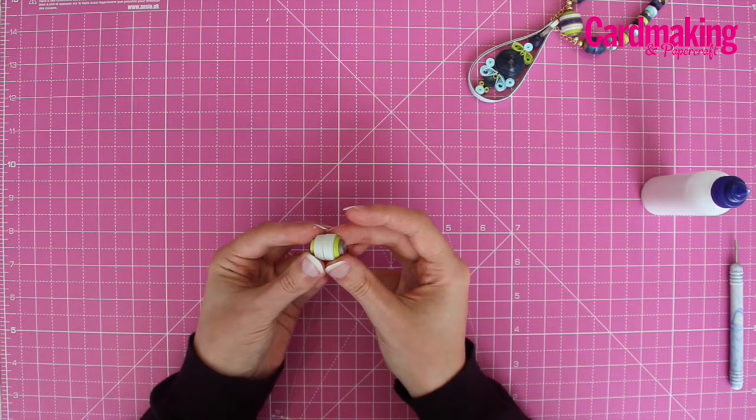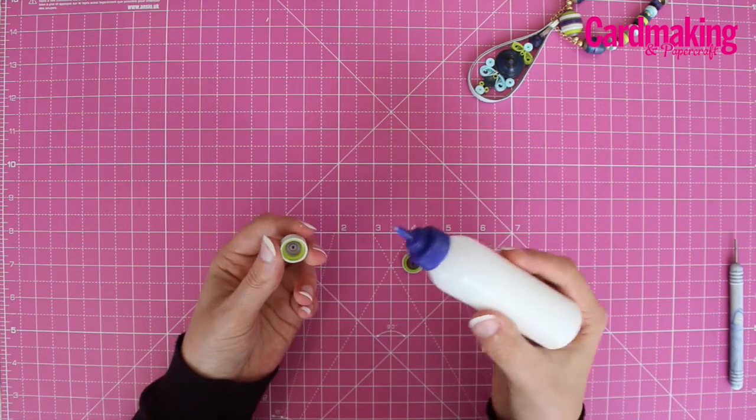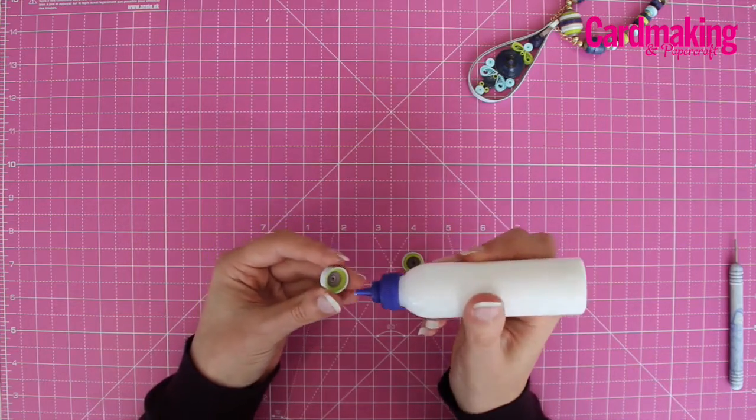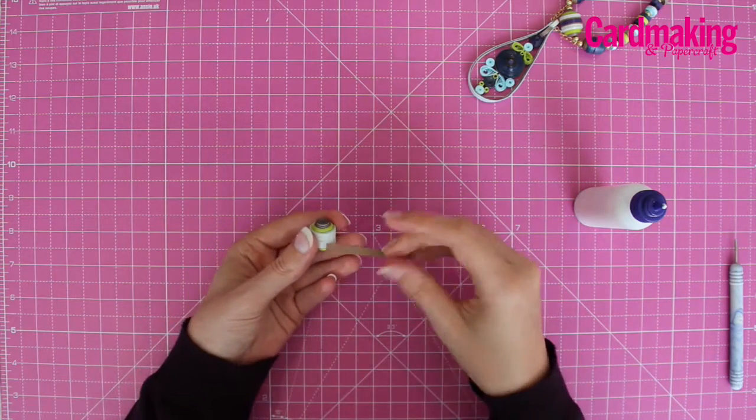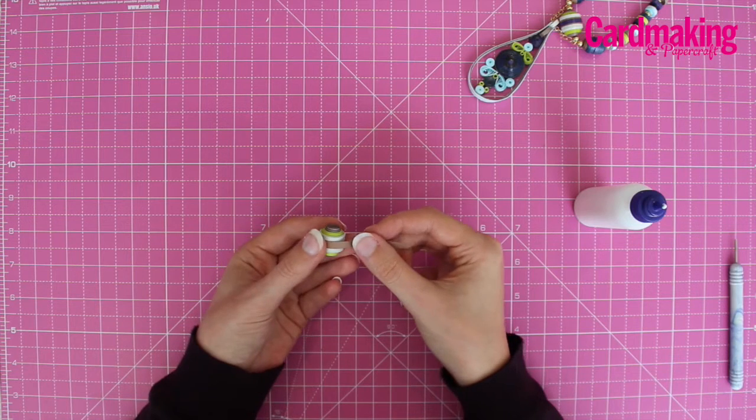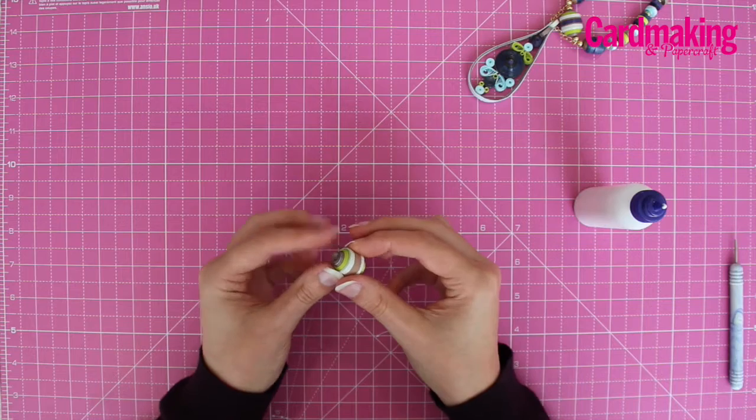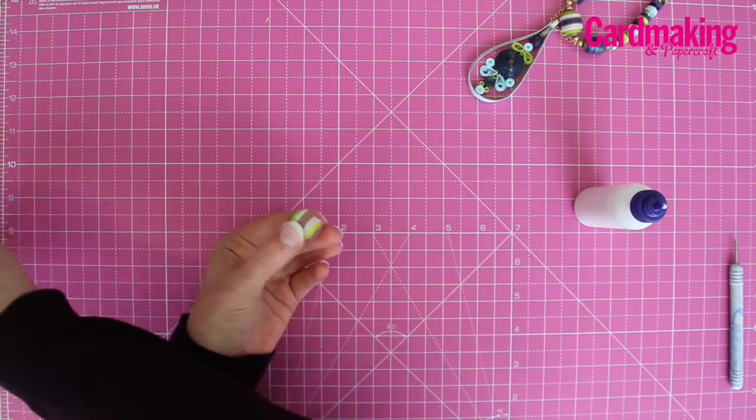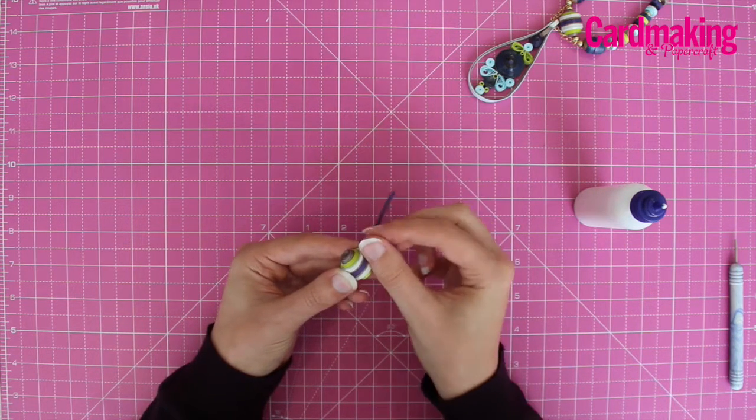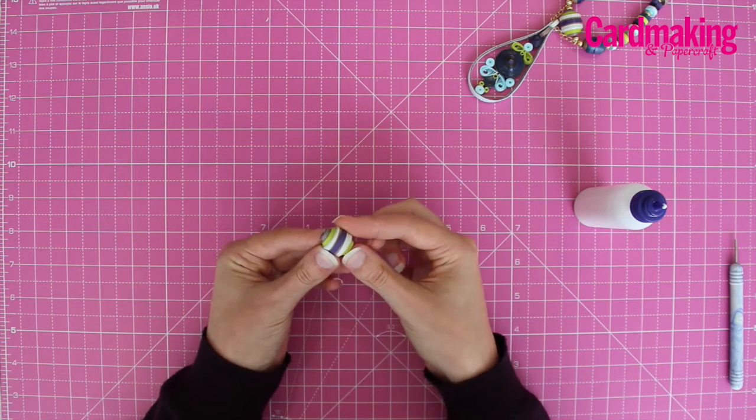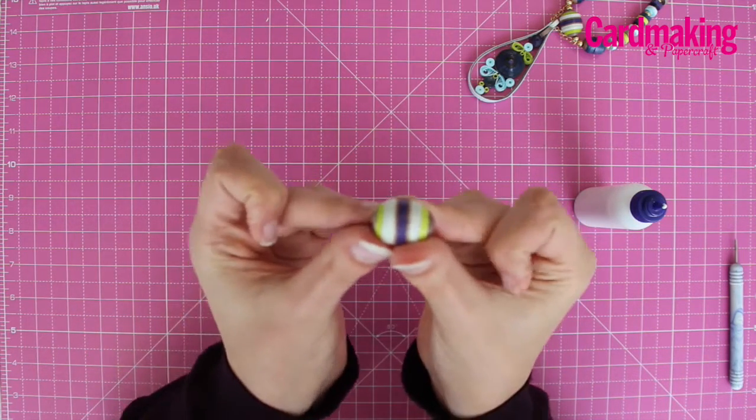Attach these together to create your bead. Then attach a thin brown strip around the bead and a smaller purple strip on top to cover up the join. Once all that has been glued in place, you'll end up with a bead that looks like this.